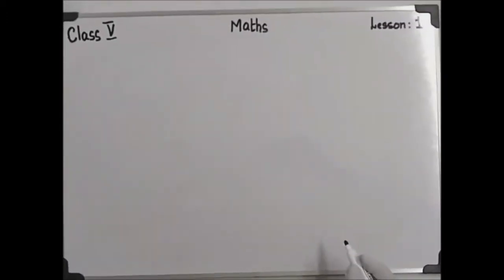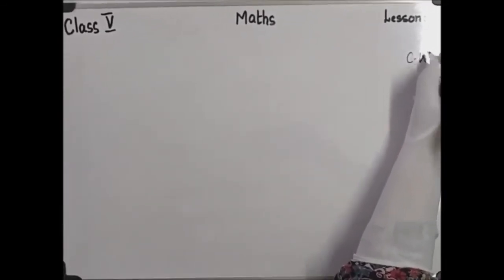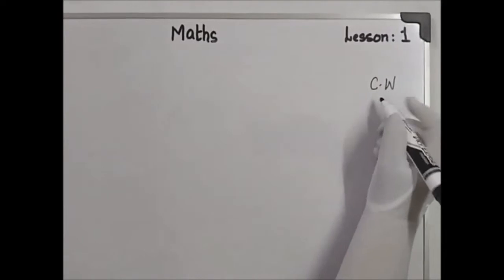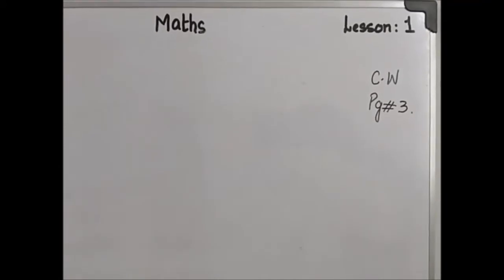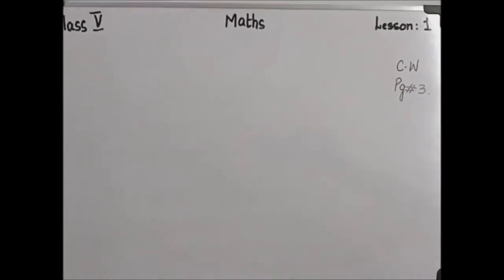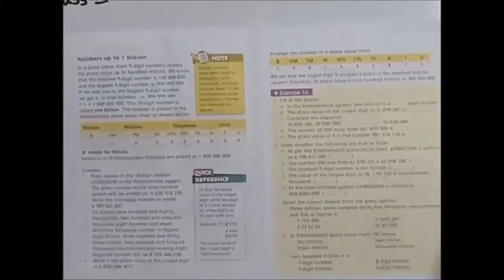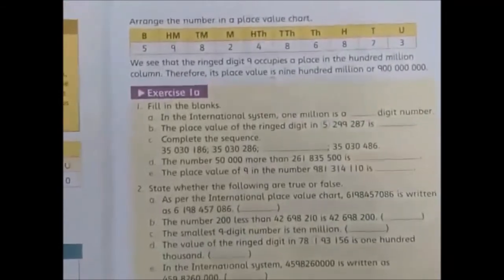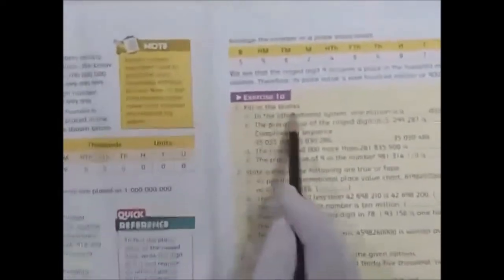Now we start our book exercise. It is your classwork, page number three. Open page number three in your exercise book, write the date, and start the exercise. First, it is question number one — fill in the blanks.